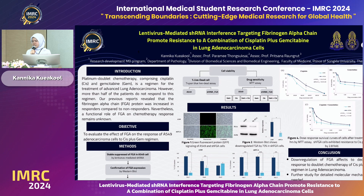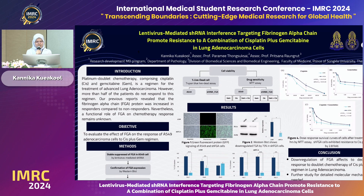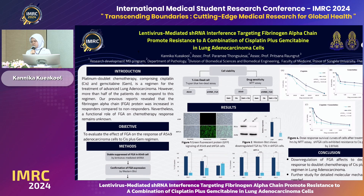However, the functional role of FGA on the chemotherapy response remains unknown. This leads to the objective to evaluate the effect of FGA on the response of A549 adenocarcinoma cells through the cisplatin plus gemcitabine regimen. The FGA gene in A549 cells was suppressed by lentivirus-mediated shRNA, referred to as shRNA-FGA.